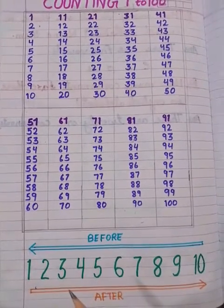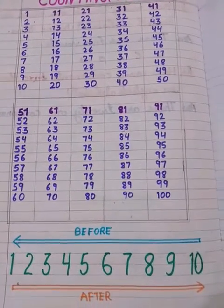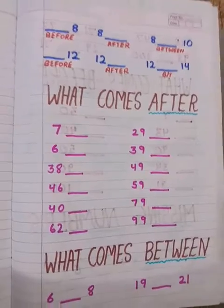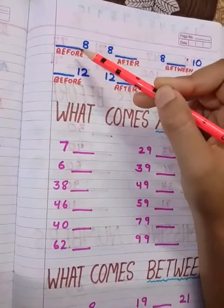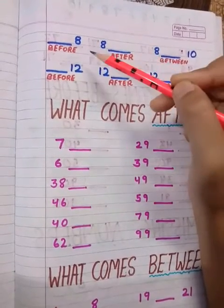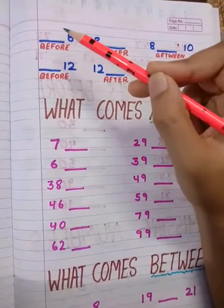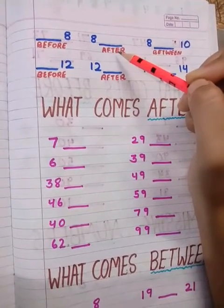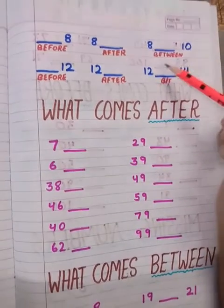Arrow right to left is for the before and arrow left to right is for the after. When the blank comes before the number that is before and when the blank comes after the number that is what comes after. When the blank comes between two numbers that is between.